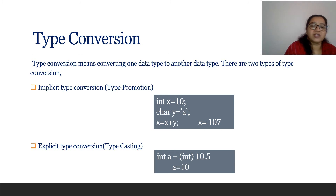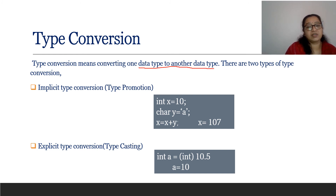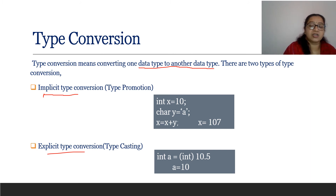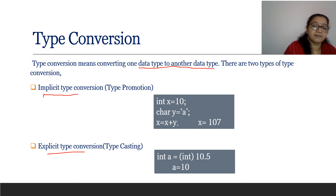Type conversion means converting one data type to another data type. There are two methods: implicit type conversion, where the system converts automatically, and explicit type conversion, where the programmer specifies which type to convert to. In implicit conversion, there is also a concept called type promotion — one data type is automatically promoted to the next higher level.